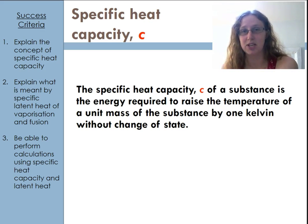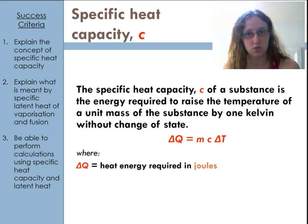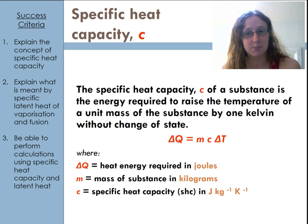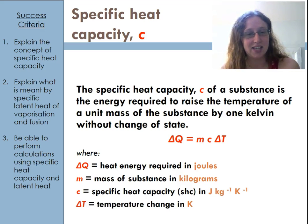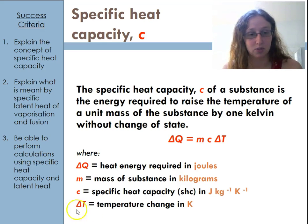The equation for specific heat capacity is ΔQ = mcΔT. ΔQ is the heat energy in joules, m is the mass in kilograms, c is the specific heat capacity — the new quantity we're meeting — and ΔT is the temperature change in kelvin, because we use the capital T. Remember that when we use capital T, we are talking about temperature in kelvin.